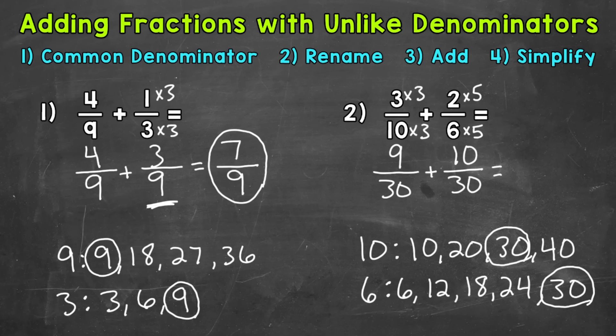Now that we found the common denominator, we renamed, we can add. So add the numerators. 9 plus 10 is 19. Keep the denominator of 30. And our final answer is 19 thirtieths. We can check to see if we can simplify. But 19 thirtieths is in simplest form. The only common factor between 19 and 30 is 1. So we are done.